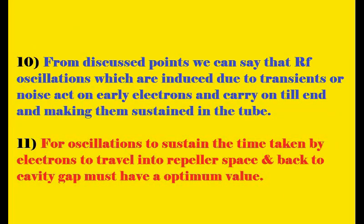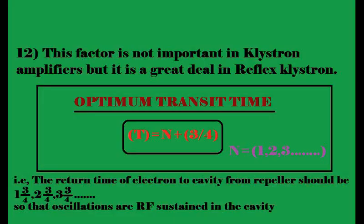The oscillations induced initially due to noise or transients, acting on the early electron, are carried through and sustained in the tube to produce microwave oscillations. For these oscillations to be sustained, the time taken by the electron to travel into the repeller space and back to the cavity gap must have an optimum value. This transit time factor is not important in klystron amplifiers since there is no feedback, but in the reflex klystron oscillator it is of great importance, as the reflected bunch of electrons acts as feedback.